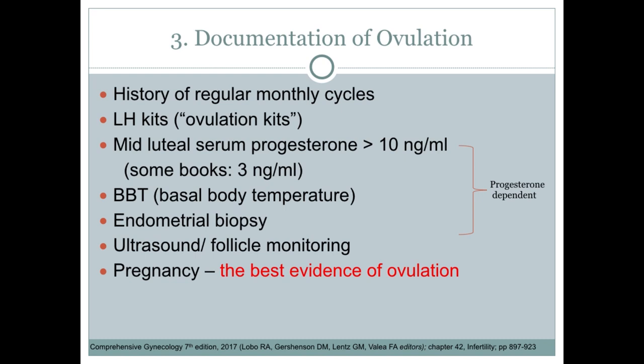The third step is to document ovulation. Preliminary information that the woman is ovulatory is provided by a history of regular menstrual cycles. If the patient has regular menstrual cycles, chances are she is ovulatory. A serum progesterone level should be measured in the mid-luteal phase to provide indirect evidence of ovulation as well as normal luteal function. Above all, the best evidence of ovulation is, of course, pregnancy.